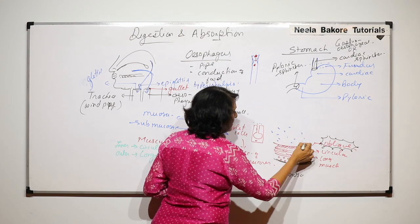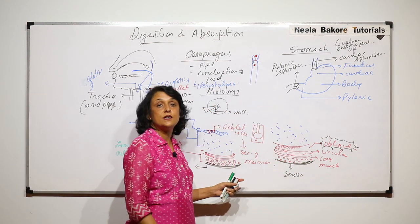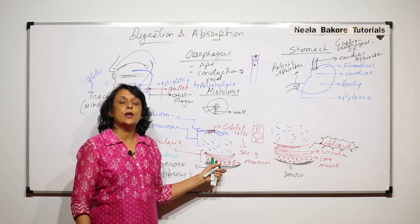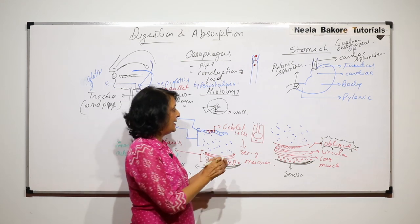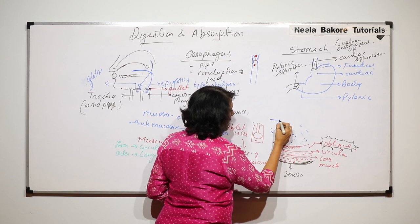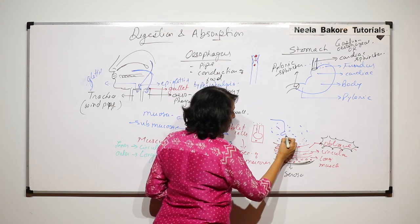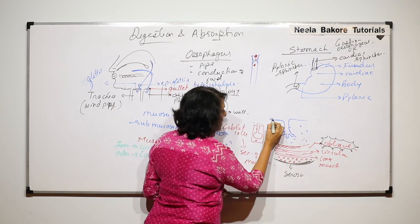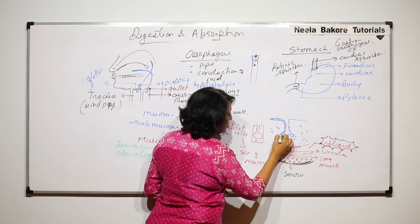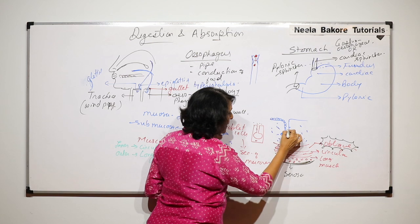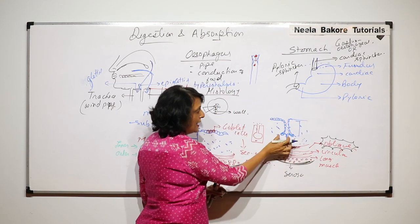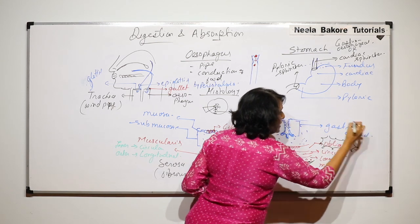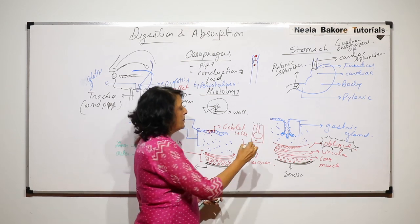After the muscularis is the submucosa — blood vessels, connective tissue, nerve fibers. The mucosa in the stomach is modified into gastric glands. These are simple branched tubular glands — tube-like structures with simple branching — found throughout the stomach.